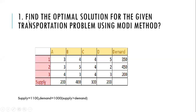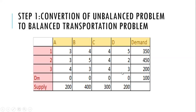The question asks to find the optimal solution for the given transportation problem using the Modified Distribution (MODI) method. The problem contains three supply points and four demand points. The total supply is 1100 and the total demand is 1000, so supply exceeds demand by 100 units. Therefore, we need to add an extra dummy row of 100 units.